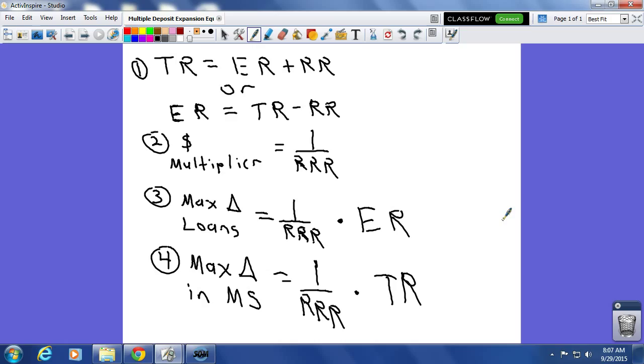So, total reserves is equal to excess reserves plus required reserves. An algebraic manipulation of this is that excess reserves is also equal to the total reserves minus the required reserves. So, if you just want to straight figure out what your excess reserves are, just take your total reserves and subtract your required reserves.